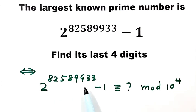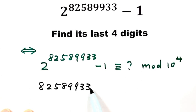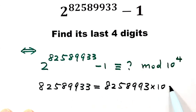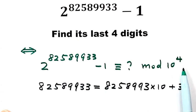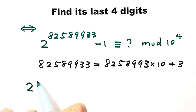First, let's look at the exponent: 82,589,933. Let's rewrite this number by separating the last digit from the rest. So we have 82,589,930 times 10, plus the last digit, 3. First we're going to figure out the remainder of 2 to this power divided by 10 to the power of 4.